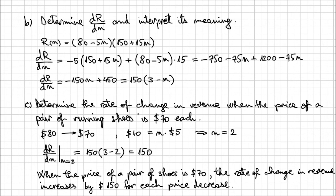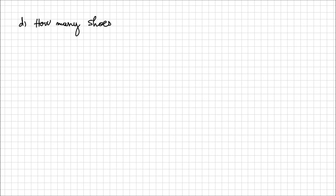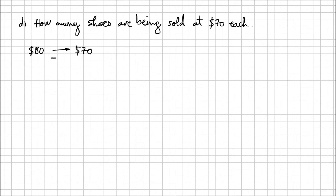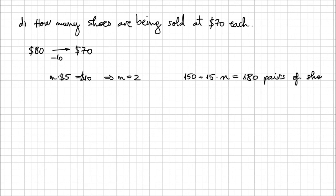Let's answer one more question related to this problem. At point D, how many shoes are being sold at a price of $70 each? From the initial price of $80 to $70 is a difference of $10, corresponding to two $5 decreases, so n = 2. The expression for pairs of shoes sold was 150 + 15n. Replacing n with 2 gives 150 + 30 = 180 pairs of shoes sold at the price of $70 per pair.